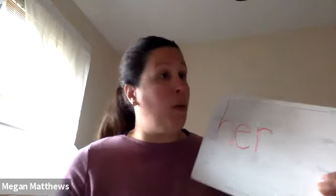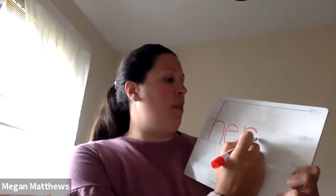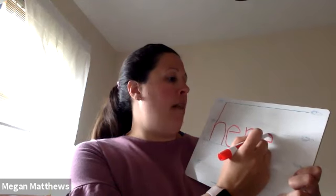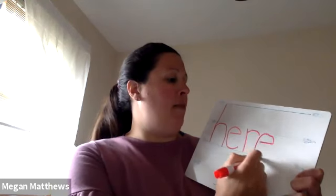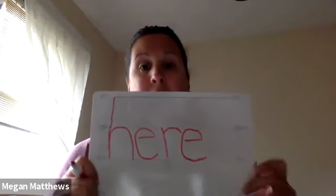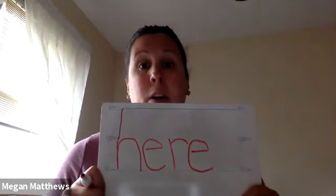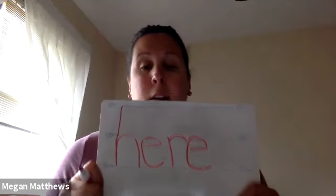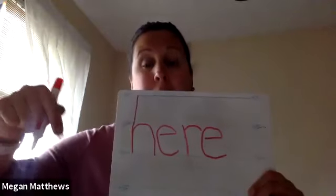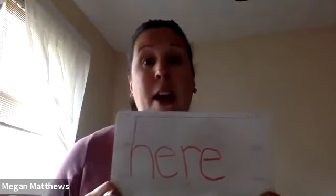Now we need another E at the end to make the word here. Again, we start just below the plain line. We hit the ball out, we fly up to the plain line, we come around and down. Now this is the word here, as in, I am here in my house. This is the location word about where you are. I am right here, and if you're watching this, you're right here at your computer.